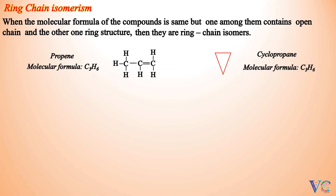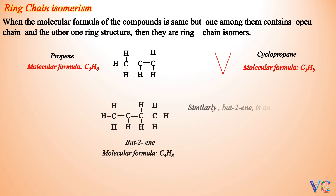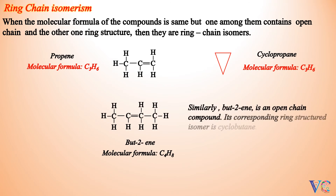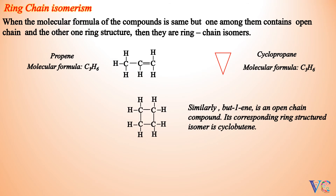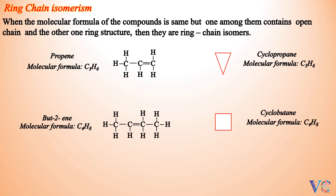The molecular formula of both propene and cyclopropane is C3H6. Similarly, but-2-ene is an open chain compound; its corresponding ring-structured isomer is cyclobutane. The molecular formula of both these compounds is C4H8.